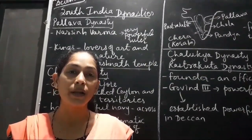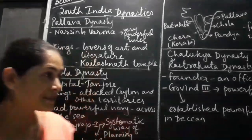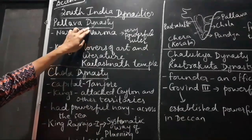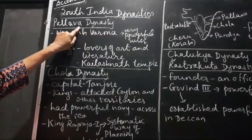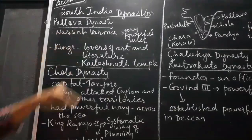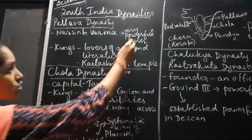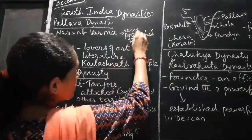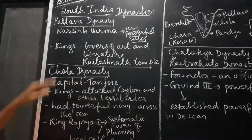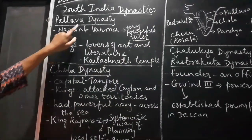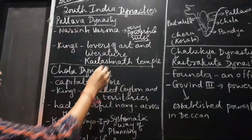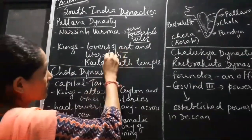Let us start with Pallava dynasty. Pallava dynasty was in South India and Narsi Verma was the most powerful ruler among other kings. The kings of this dynasty were lovers of art and literature.